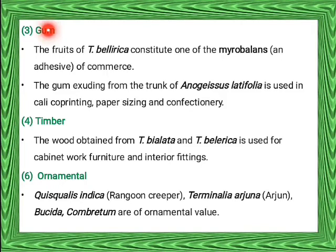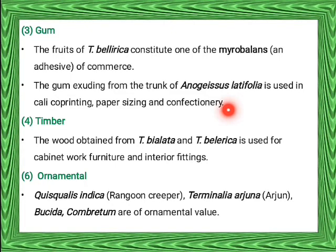The gum exuding from the bark of Anogeissus latifolia is used in calico printing — the process of making first color designs on cotton fabrics, especially calico — paper sizing, and confectionery as a sweetening agent used in sweet shops. The wood obtained from Terminalia bialata and Terminalia bellerica is used for cabinet work, furniture, and interior fittings. For ornamental purposes, Quisqualis indica (Rangun Creeper), Terminalia arjuna, Bucida, and Combretum are of ornamental value.